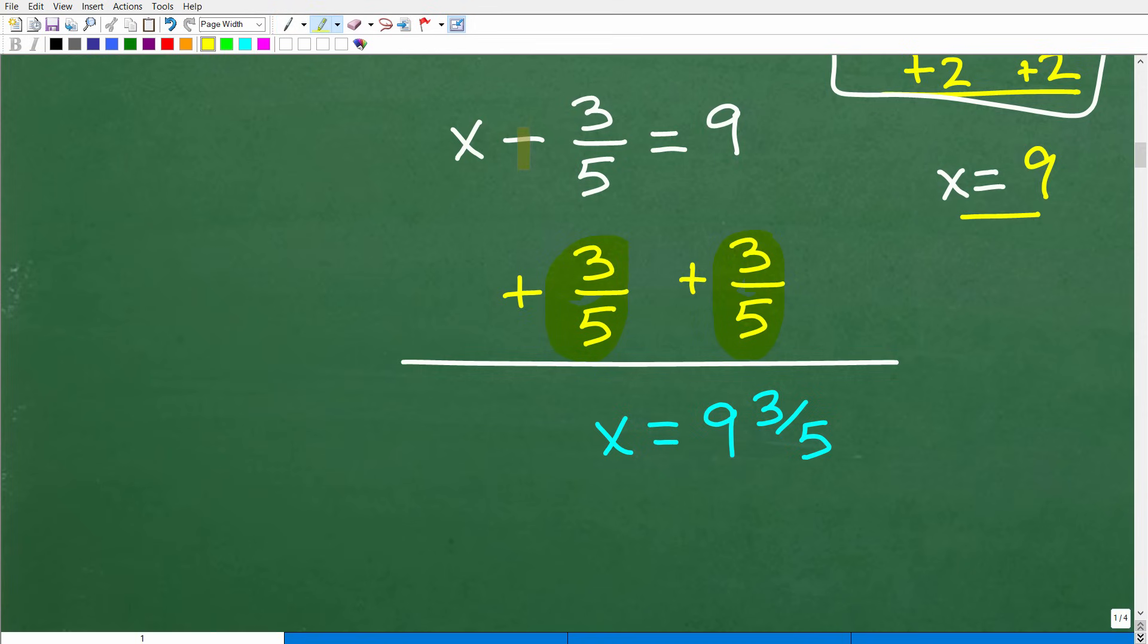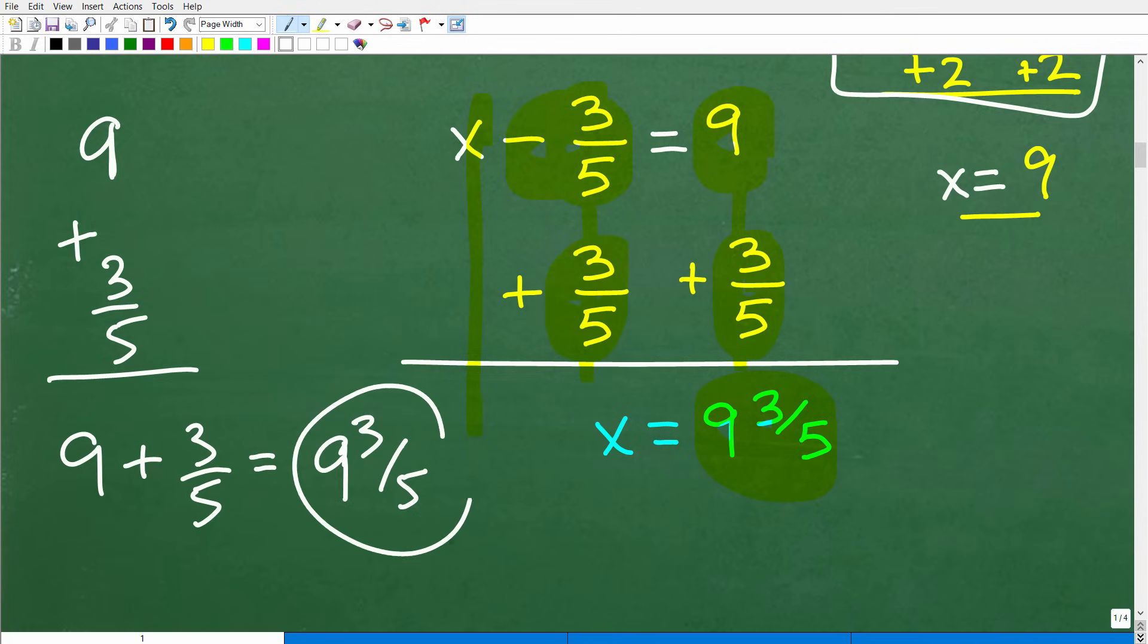So here, what we're going to do is we're going to add three-fifths to both sides of the equation. And what do we have here? So negative three-fifths plus three-fifths is zero. So that's x. You're going to add down in a column manner. And then nine plus three-fifths is what? Nine and three-fifths. Nine plus three-fifths is the same thing as nine plus three-fifths, which is the same thing as nine and three-fifths, that mixed number fraction.